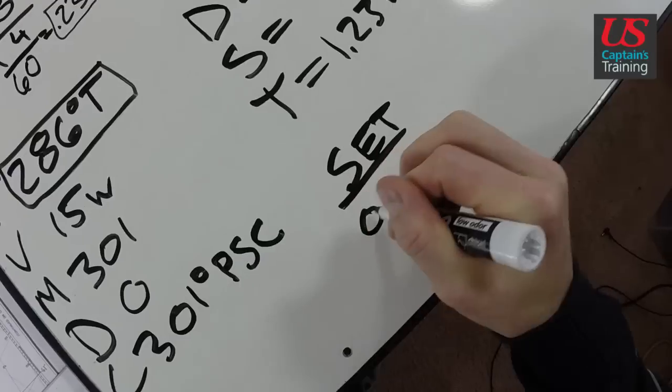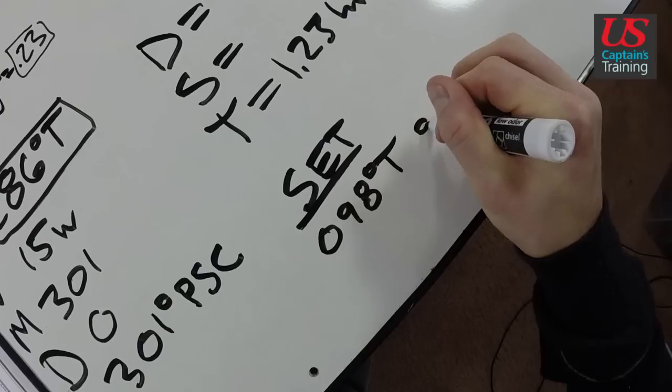So we have a set. A set of 098 degrees true.